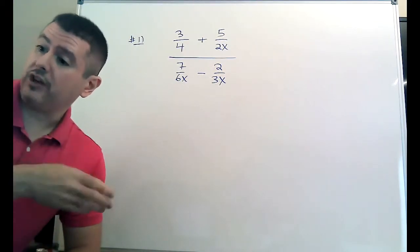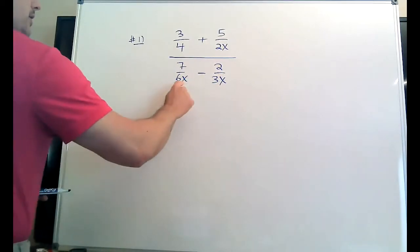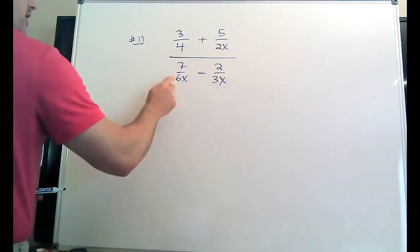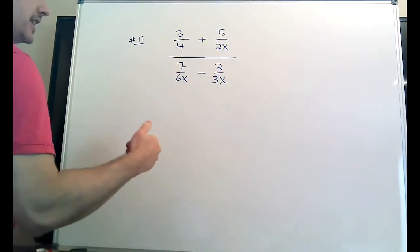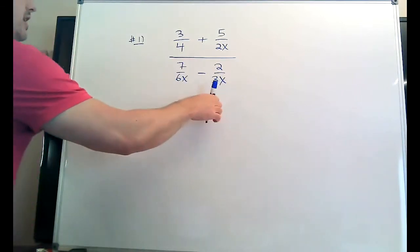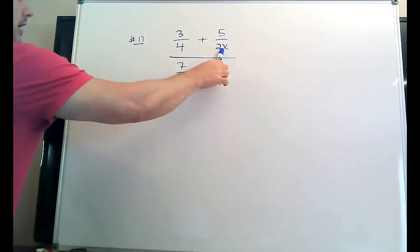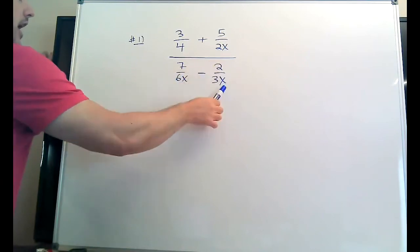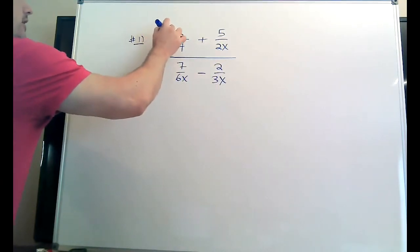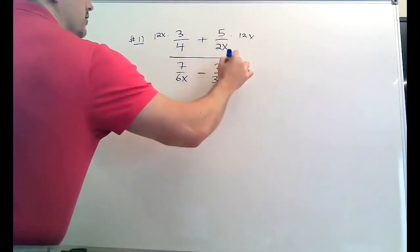You take the biggest one, which is six: six, 12, 18 — 12 is going to work, right? Because two, three, four, and six all divide evenly into 12. And you take the highest power of whatever letter you see. I see an X and the highest power is one. So you're going to put a 12X on the top of every one of these.